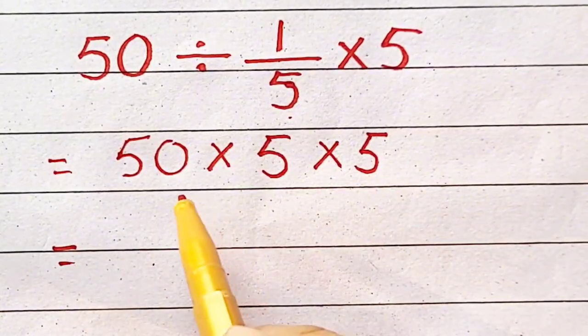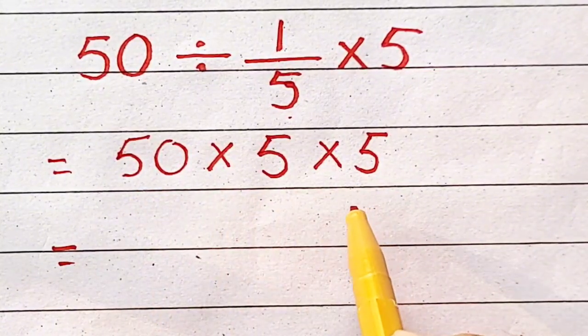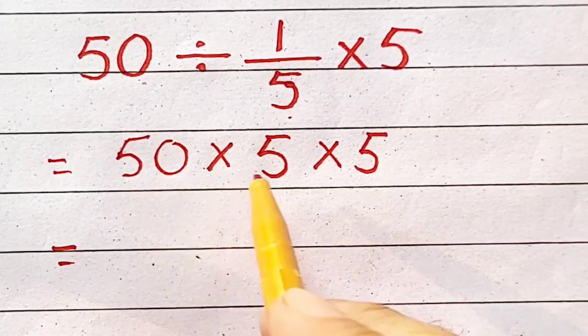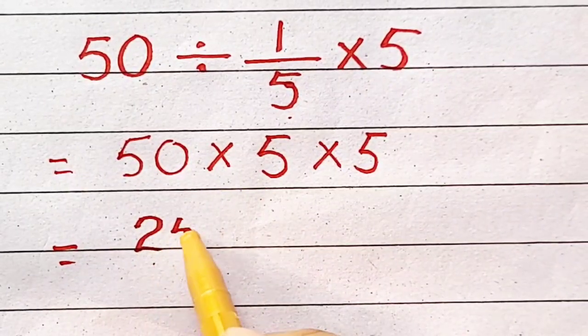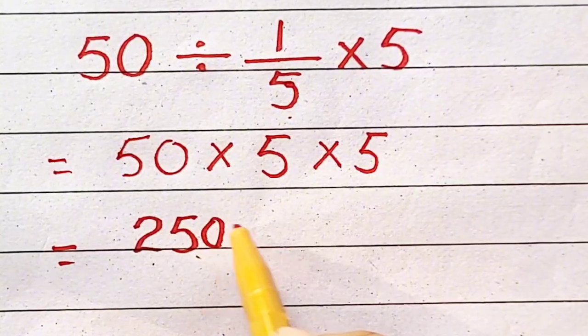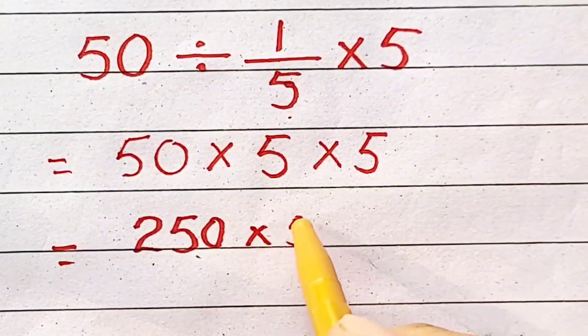So, these 3 terms will be multiplied. 50 multiplied by 5 will be equal to 250, multiplied by 5.